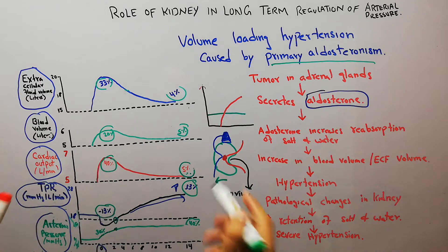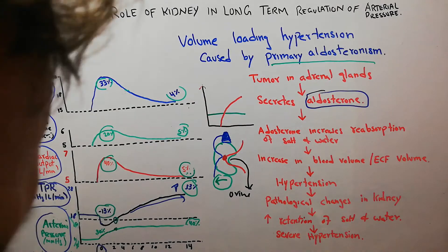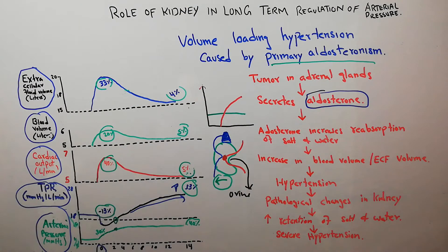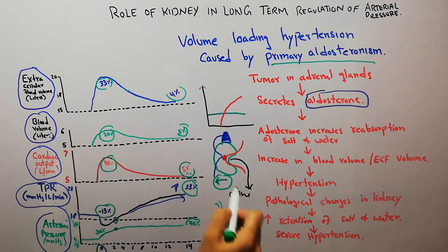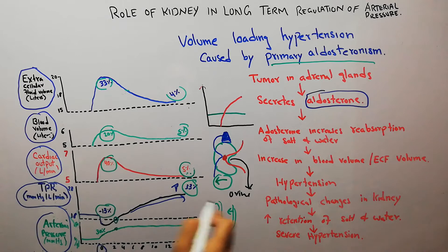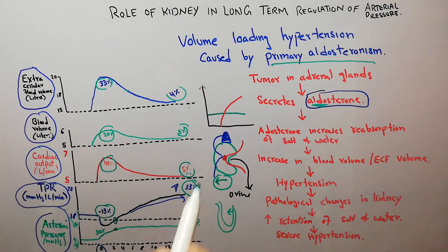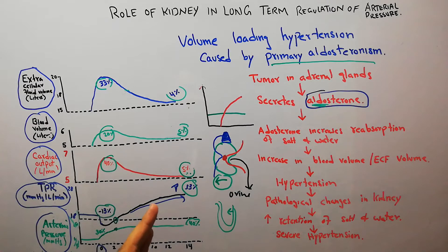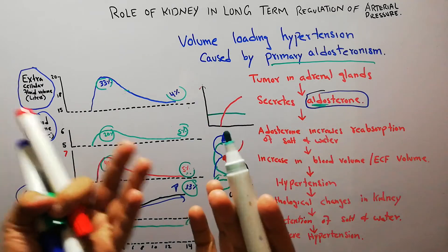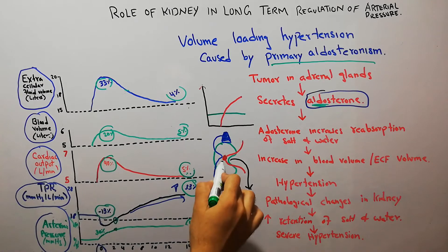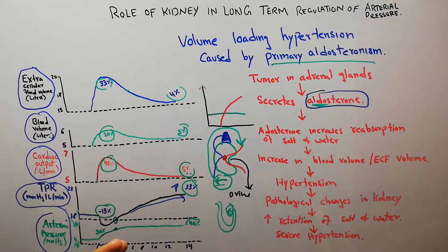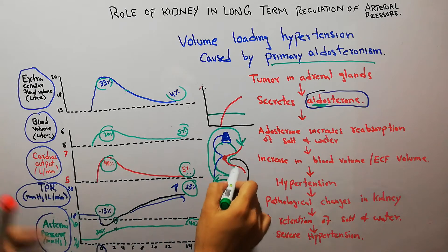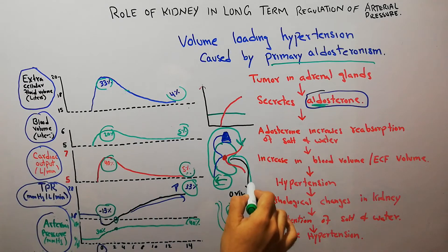Aldosterone helps in the reabsorption of salt and water from the filtrate. After the blood is filtered in the glomerulus, it passes through the renal tubules where aldosterone facilitates reabsorption. The amount of reabsorption depends on aldosterone level — if high, large amounts of salt and water return to the blood; if normal, excess salt and water pass into urine.